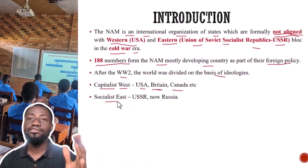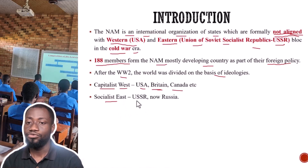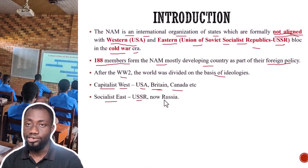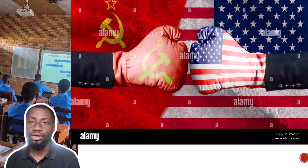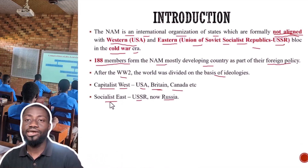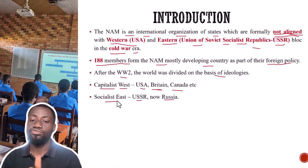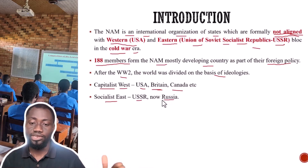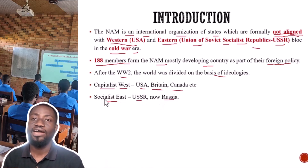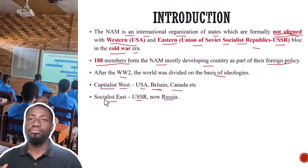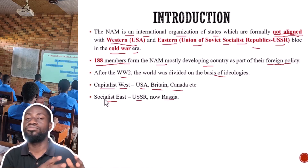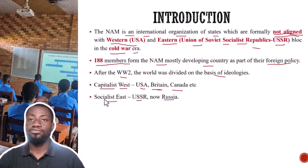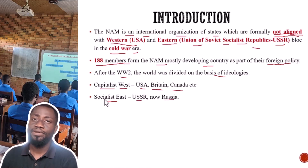This ideology was countered with a socialist ideology, also supported by the USSR — the Union of Soviet Socialist Republics, now called Russia — found in Eastern Europe. The socialists argued that when the production of goods and services is in the hands of the individual, the individual becomes richer — those who establish the industries become richer at the expense of the working masses.